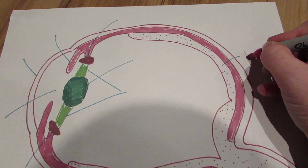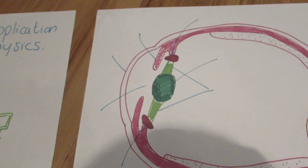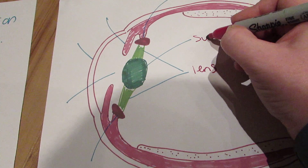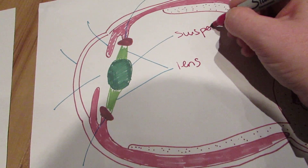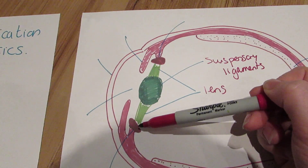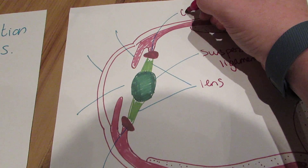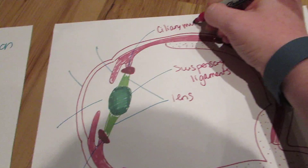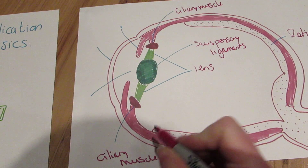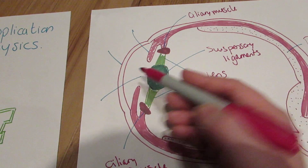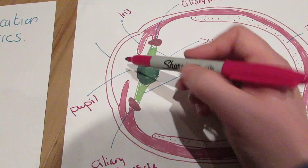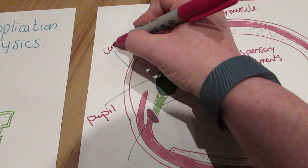The bit that goes all the way around the edge is the retina. The big green bit in here is the lens. The two parts either side of the lens are the suspensory ligaments. These two bits here, one either side, are the ciliary muscles. This bit here that you can see where it just appears to be a gap — this is the pupil. This here is the iris. And all around the outside you can see is the cornea.